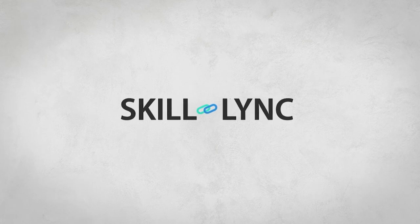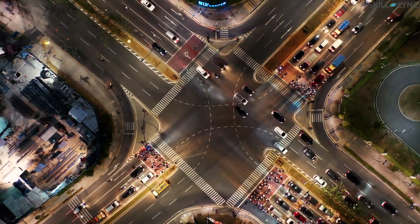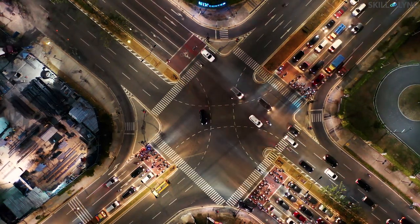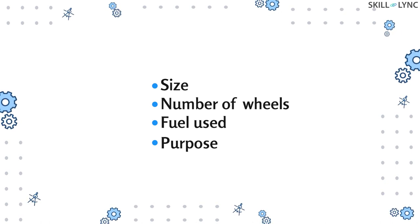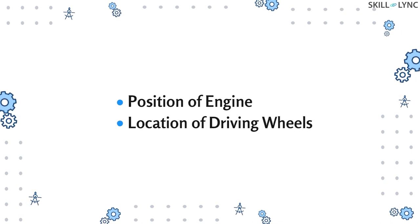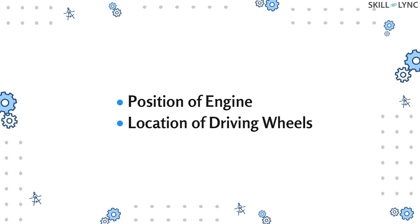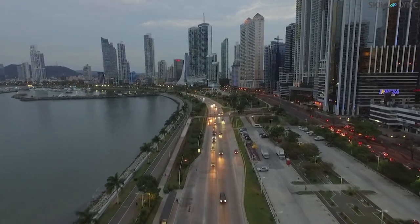Hey guys, welcome to Skill Link. We see a lot of automobiles in our day-to-day life. The vehicles that we see have a wide range of variations in them — they vary in size, number of wheels, type of fuel used, purpose of the vehicle, and so on. In addition to all these, automobiles can also vary in the position of the engine and location of the driving wheels.